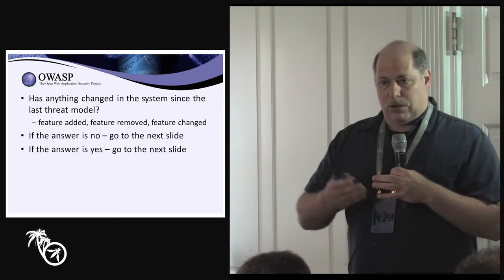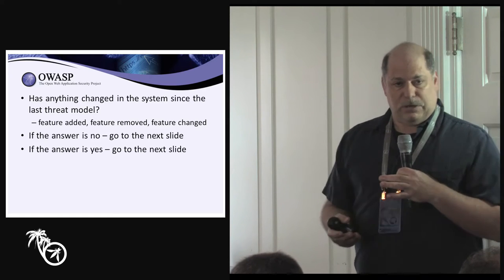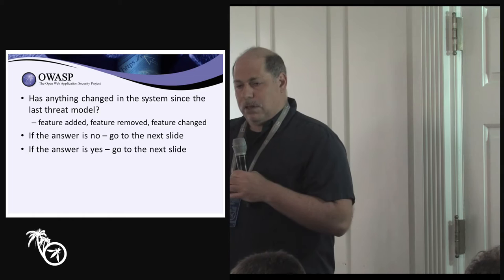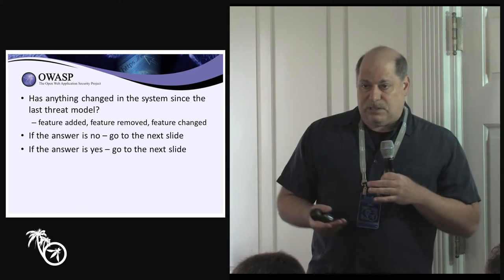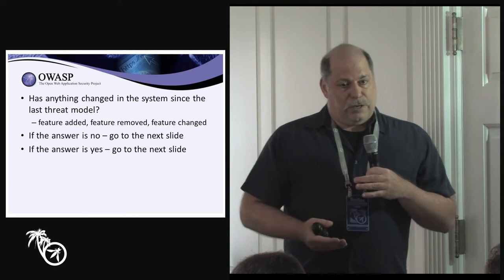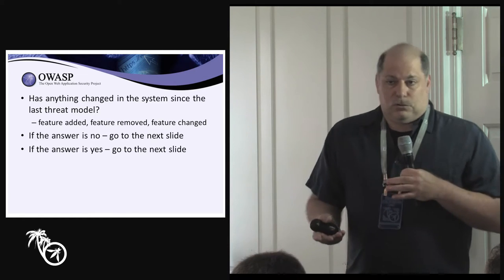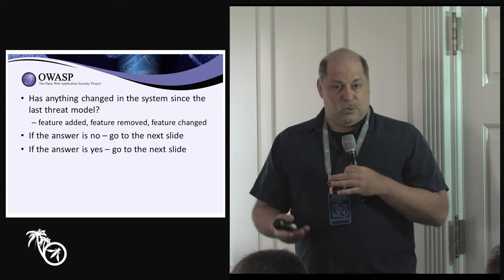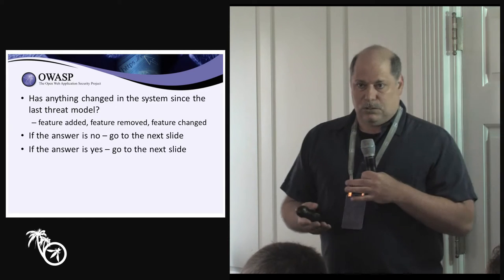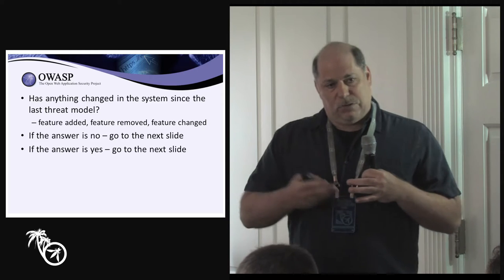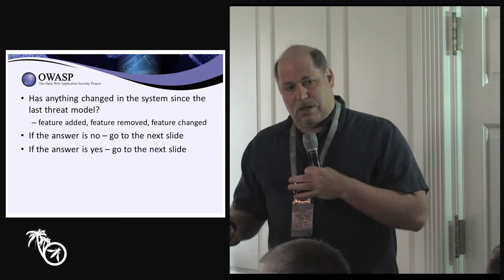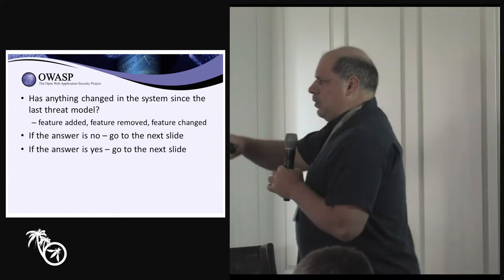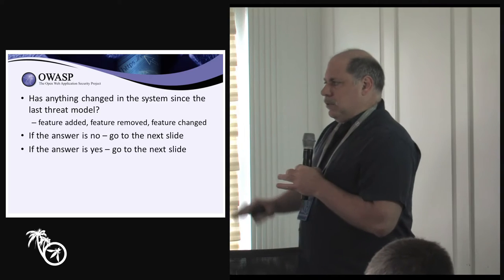You need to know things like: Did I create a new entry point for somebody to attack the system? Is there something now of value that wasn't there before, that someone is now incentivized to go get? Are we going to use a control that has historically been difficult to implement well? These are the kinds of things you take into your decision-making about whether to revisit the threat model.